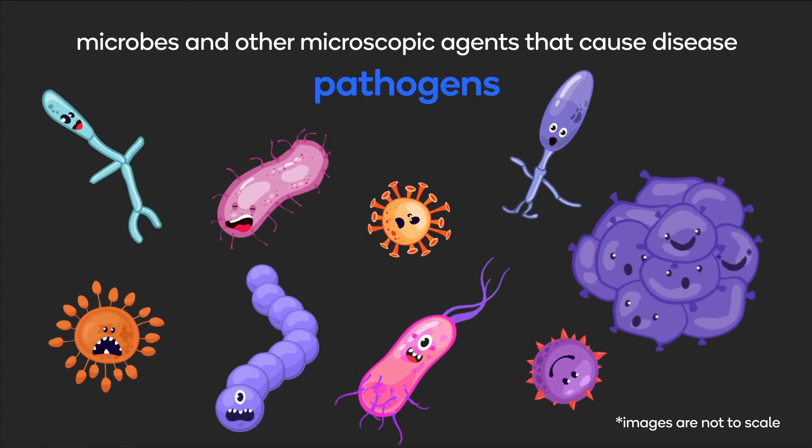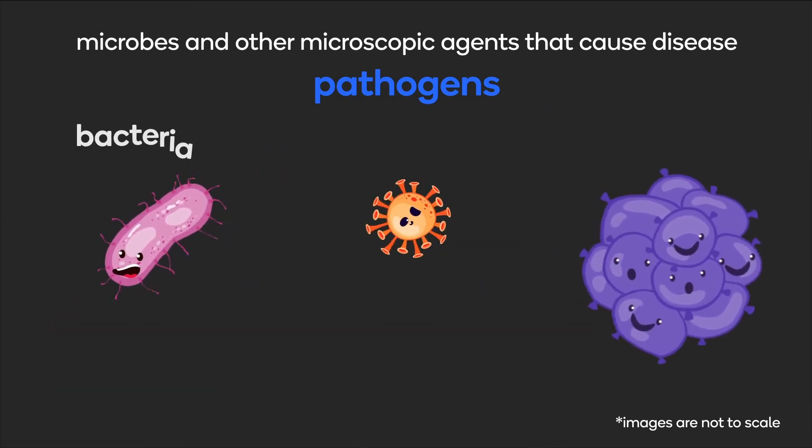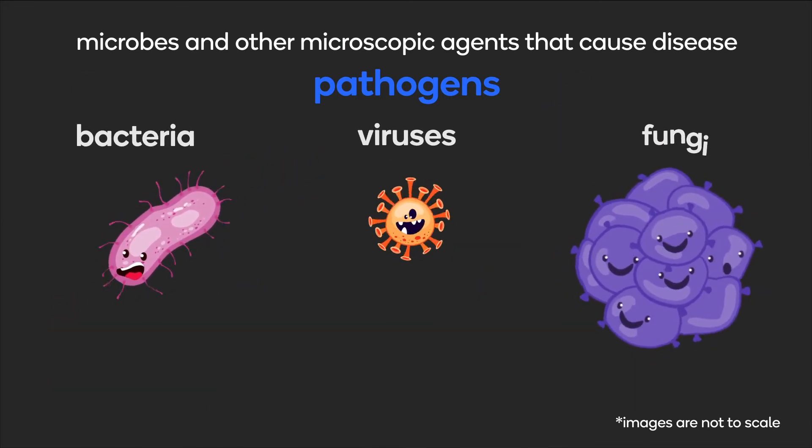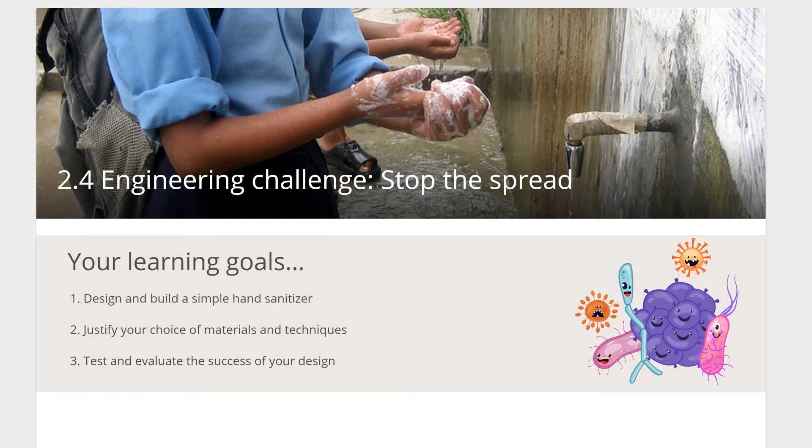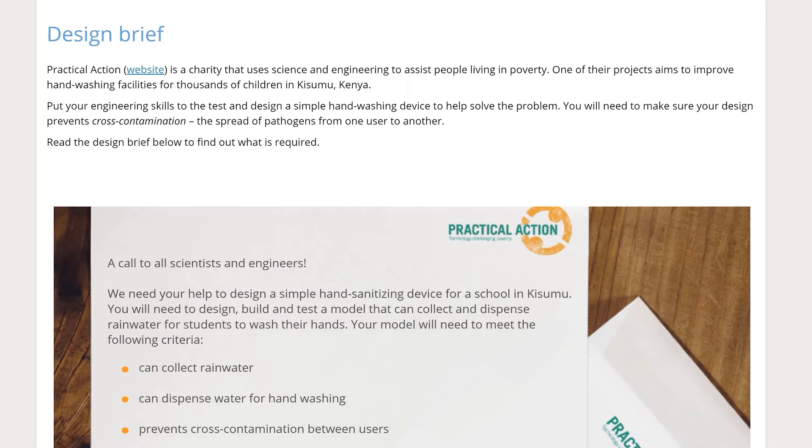In the second chapter, students go on to learn about pathogens that cause disease and how infectious diseases spread. They also practice STEM skills as they build a hand sanitizer device.